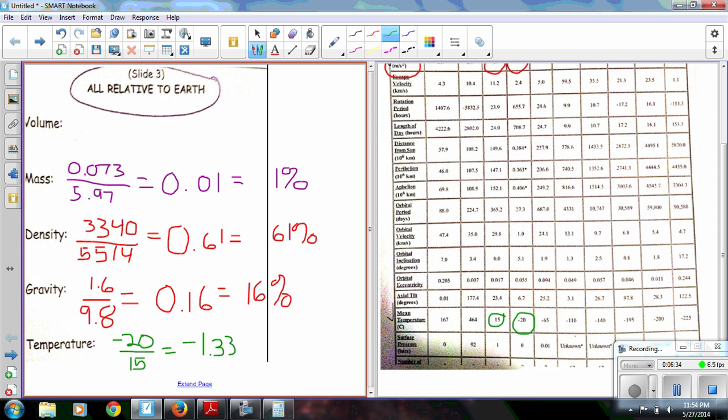Now, that doesn't mean that negative 1.33 degrees Celsius. It means that the temperature is negative 1.33 times lower than the Earth's temperature.